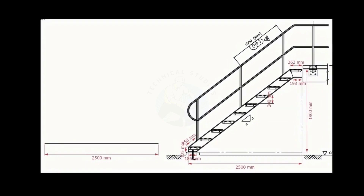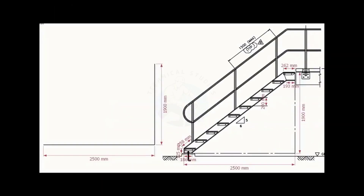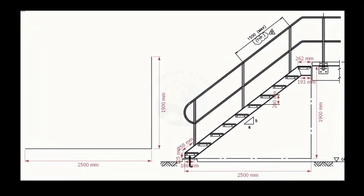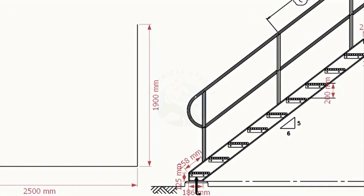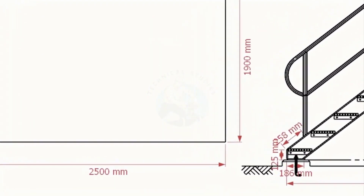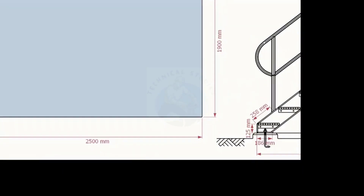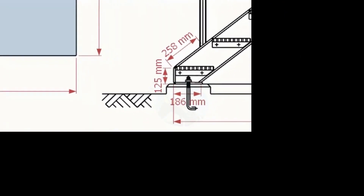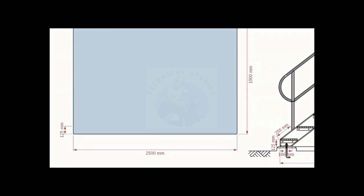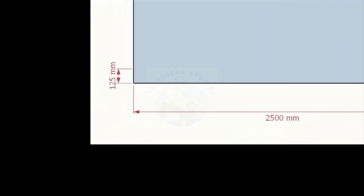Draw a 2500 millimeters long line. Draw a line vertically, 1900 millimeters long. The lines must be at a 90 degree angle to one another. Finish off the rectangle. Check the staircase landing. The end plate height is 125 millimeters. Mark a line 125 millimeters above from the bottom line.